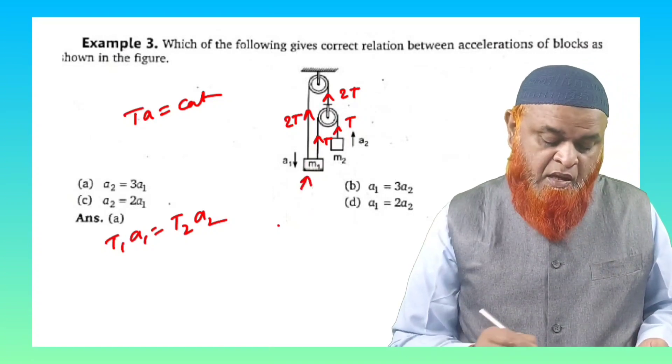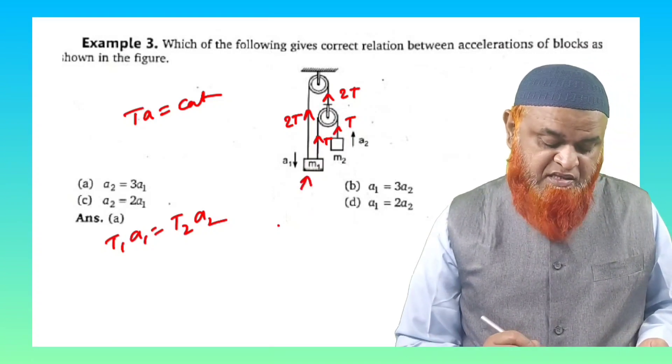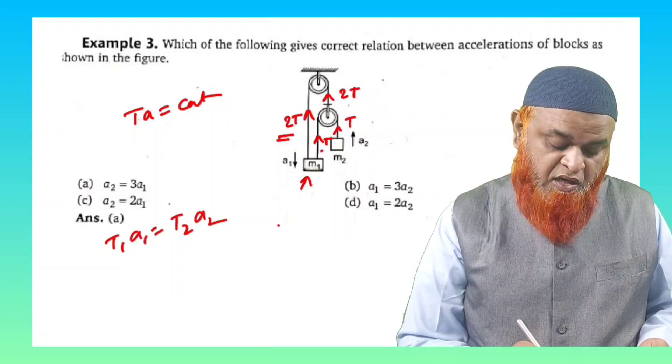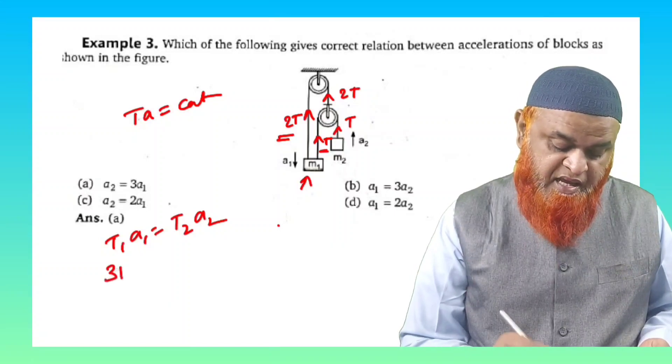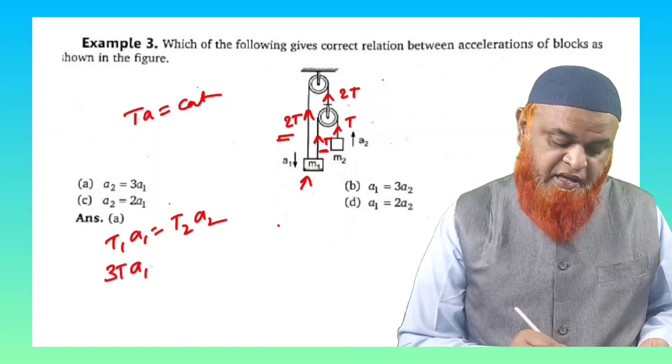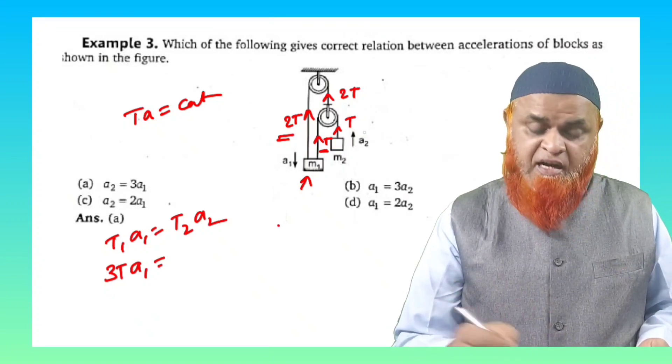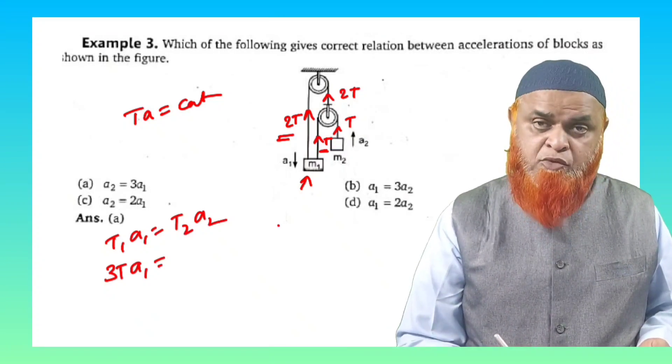So on this block of mass M₁, the total tension is 2T and T here, which is nothing but 3T, and acceleration is A₁. And on the right side of this block, that is block of mass M₂,